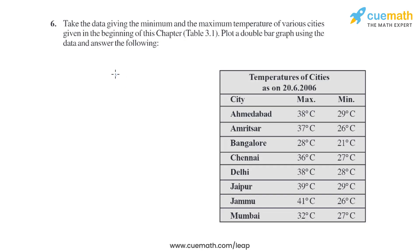Question 6 of this exercise says: take the data giving the minimum and maximum temperature of various cities given in the beginning of this chapter, table 3.1. Plot a double bar graph using the data and answer the following. There are four sub-parts in this question which we will discuss after plotting the double bar graph.